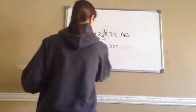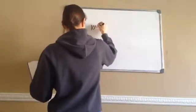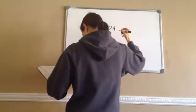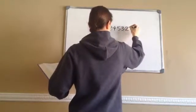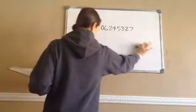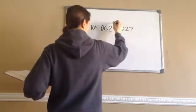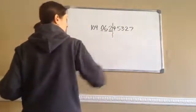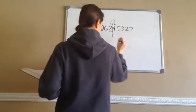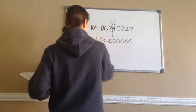Let's look at another one. We're wanting to round 1.0406245327 to the nearest thousandth. I know it's on the right side of the decimal, so: tenths, hundredths, thousandths — we're wanting to stop after this one. Look to the right. Is it five or higher? No. So this stays the same, but everything else becomes zero after that. Then I just bring everything else down, and that's my final answer.